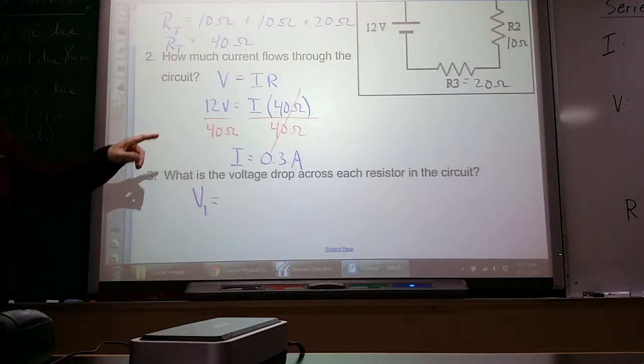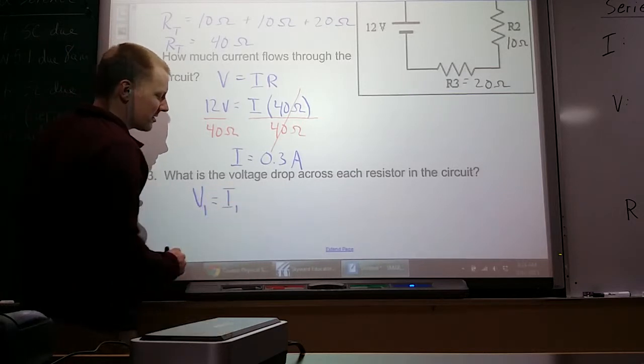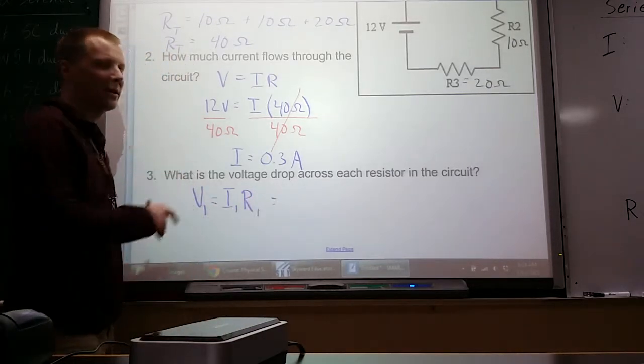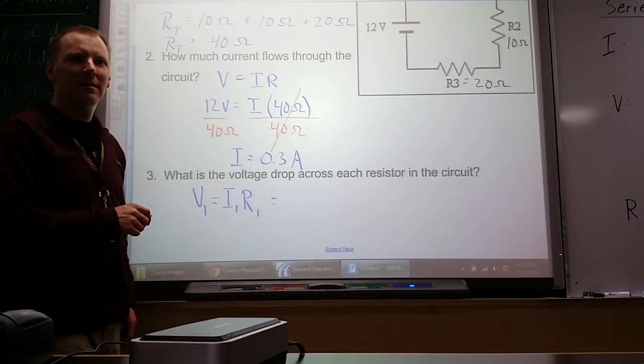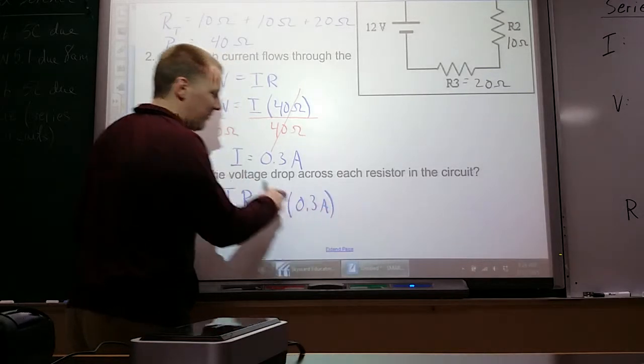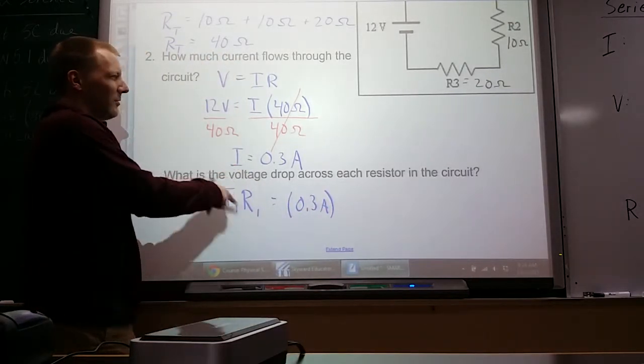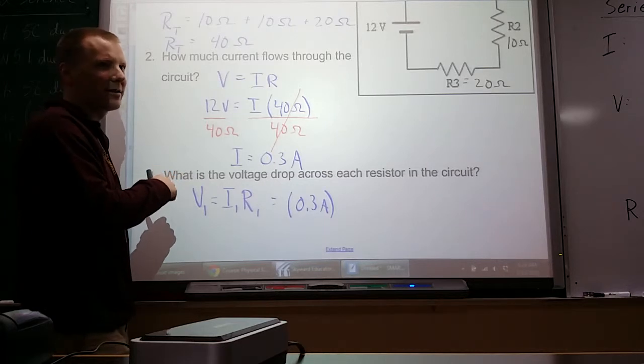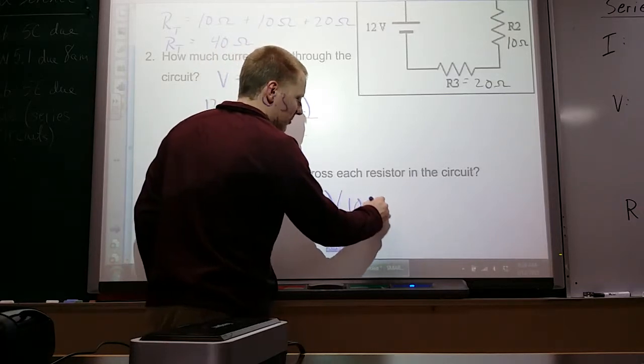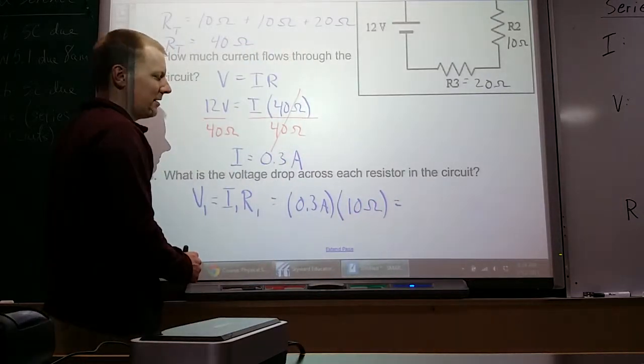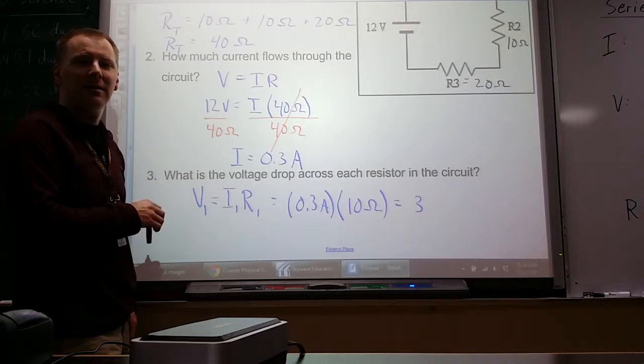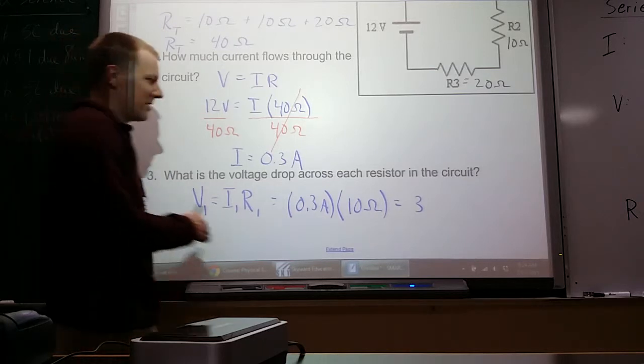So if we're looking for the voltage on our first resistor, it'd be the current through the first resistor times its resistance. So how much current is going through that? 0.3 amps. Even though we figured this out for the whole circuit, we know that it applies to every single thing in the circuit. So we'll use it each time. The voltage then is, or the resistance is 10 ohms. We could probably do that one in our head. So what's the unit? Volts. Voltage is volts.